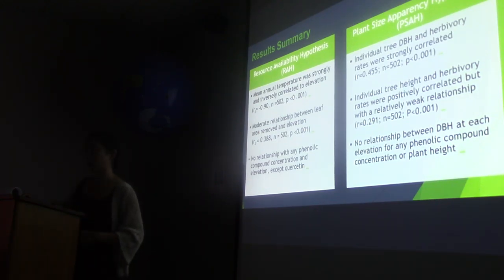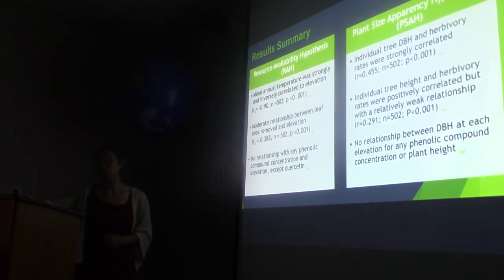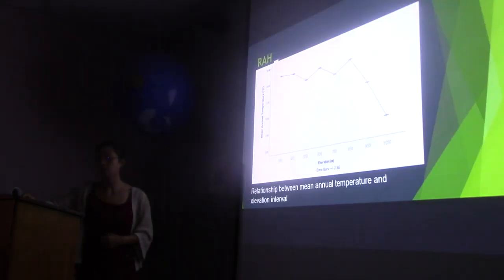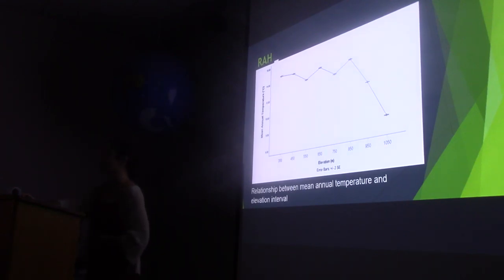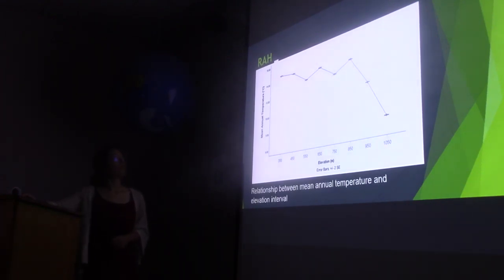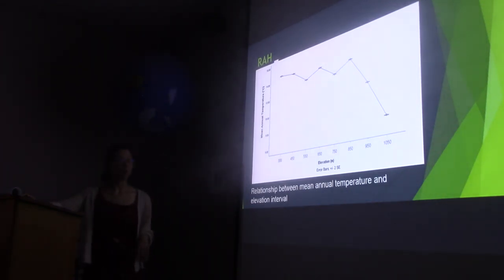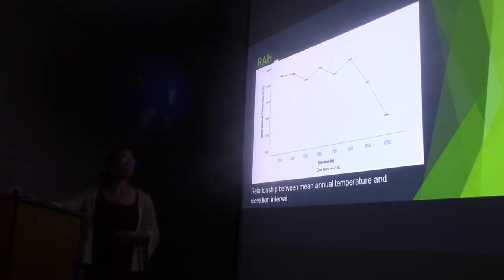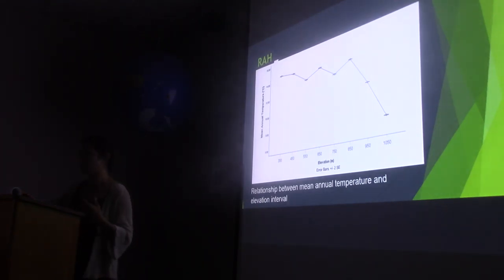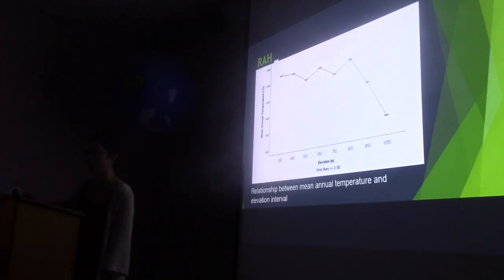Regarding results: with mean annual temperature, there was a strong inverse correlation to elevation. At lower elevations around 300 meters, you have the highest recorded annual temperatures, and at higher elevations you have the lowest. This correlation demonstrates the trend expected under the resource availability hypothesis.